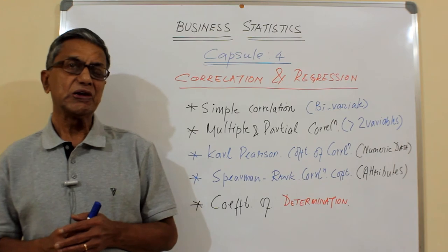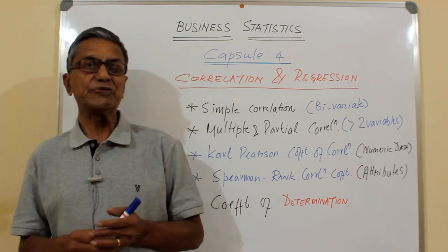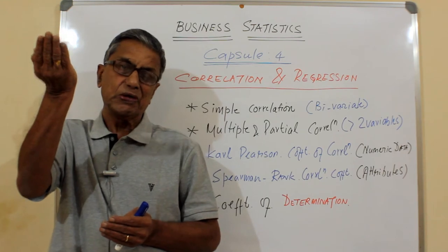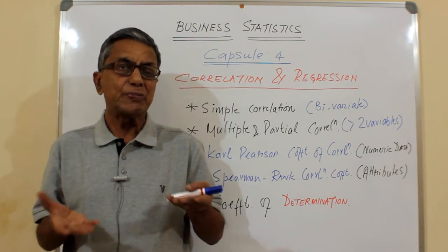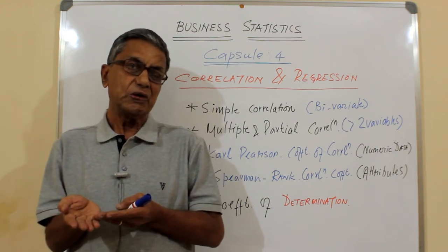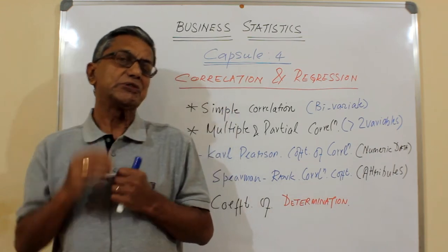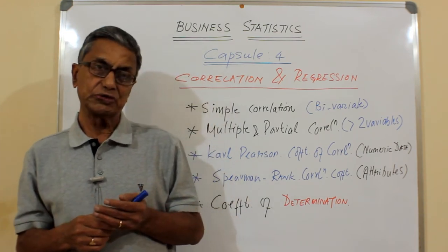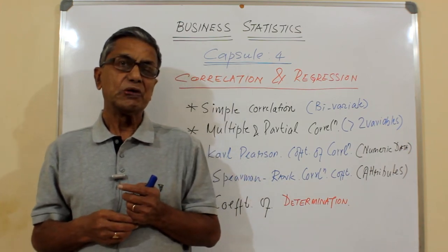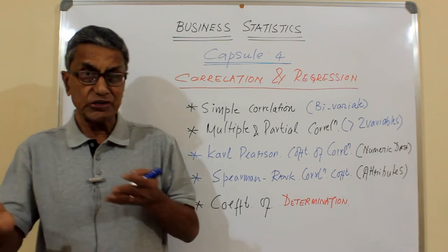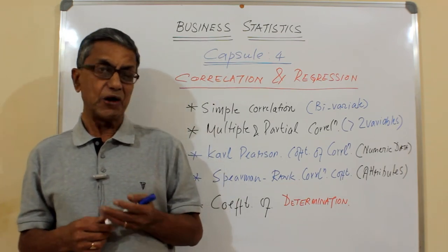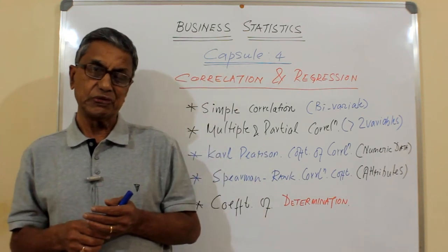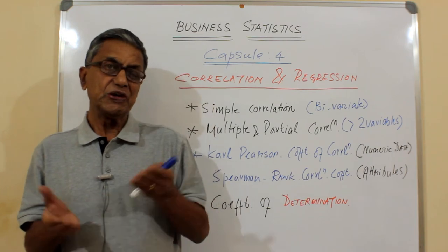We will understand this by way of certain examples. For example, if you take income and expenses — as income goes up, generally the expense also goes up. You have a propensity to buy more and tend to spend more. Similarly, agricultural production or growth of crops and the fertilizer used: different crops yield differently depending on fertilizer, soil condition, or monsoon. Again, if you take viscosity — as temperature increases, viscosity comes down.